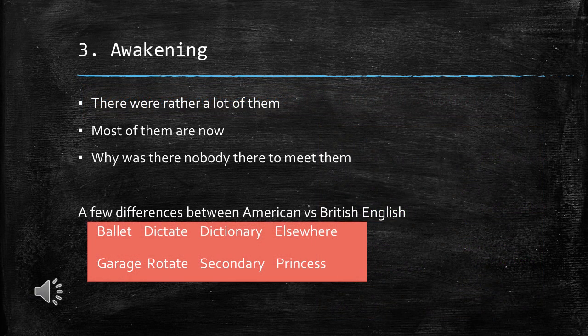There are some differences between American and British English stress patterns. Examples include: ballet, dictate, dictionary, elsewhere, garage, rotate, secondary, and princess.